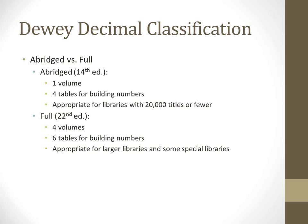Generally, the rule of thumb is that abridged is appropriate for libraries with 20,000 titles or fewer. If you have fewer than 20,000 titles, you probably don't need really long, in-depth numbers. The full Dewey, on the other hand, in the print version is four volumes, has six tables for building numbers, and is appropriate for larger libraries or perhaps some special libraries if you have really in-depth coverage of a particular topic and need to make distinctions between different facets that a more general library wouldn't need to make.